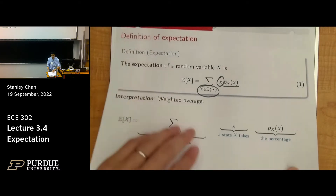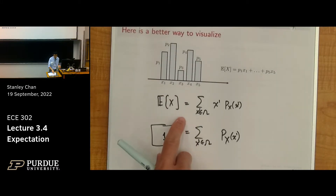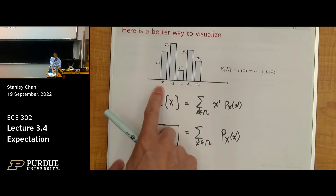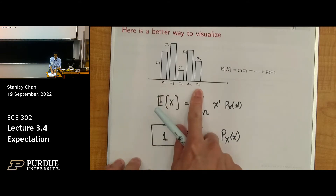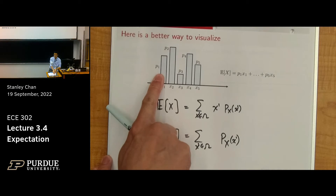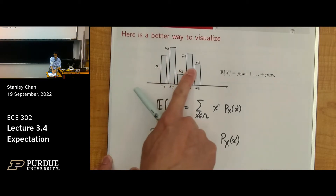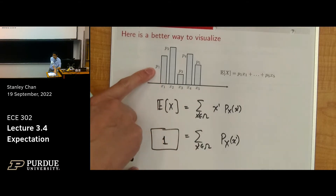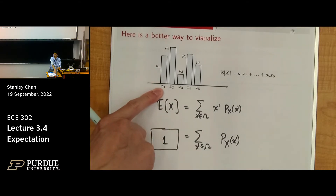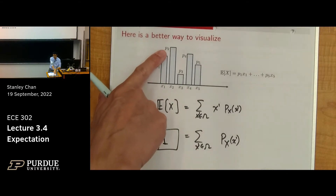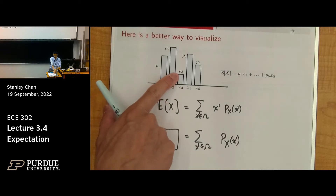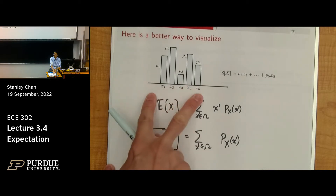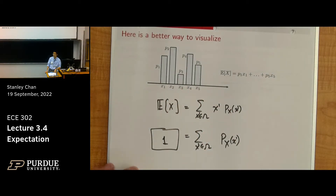Pictorially, if you have this example with five states x1 through x5, each state has a height of the probability mass p1 to p5. Then the expectation would just be p1 times x1, plus p2 times x2, plus p3 times x3, all the way to p5 times x5. You sum everyone up and you get the expectation.